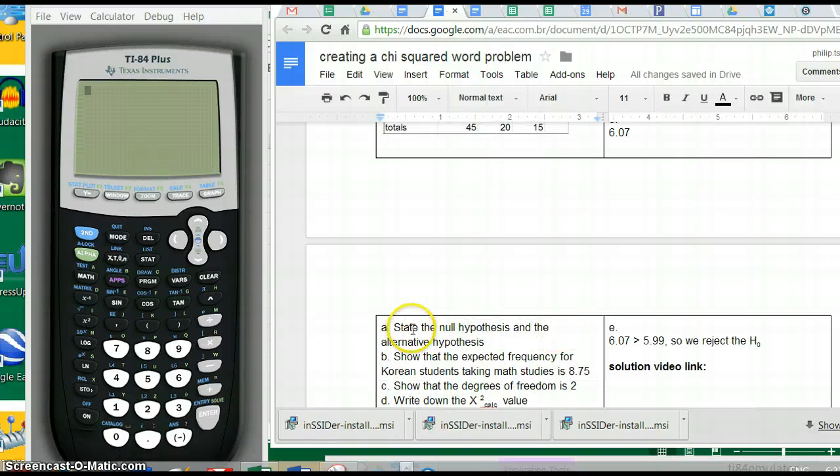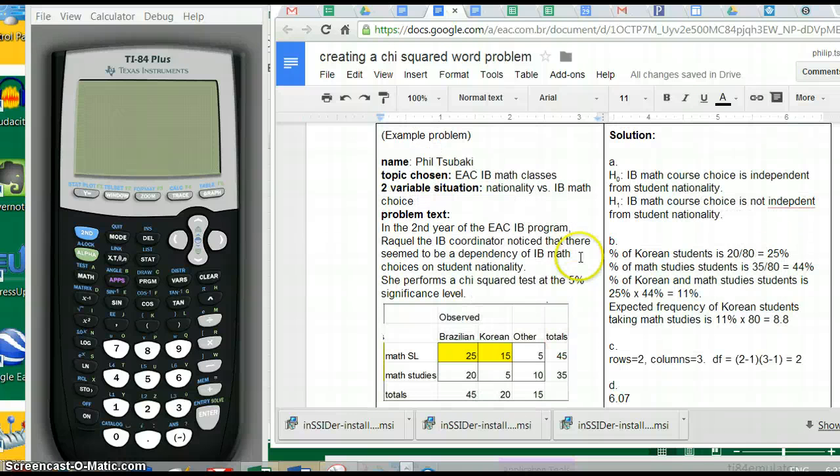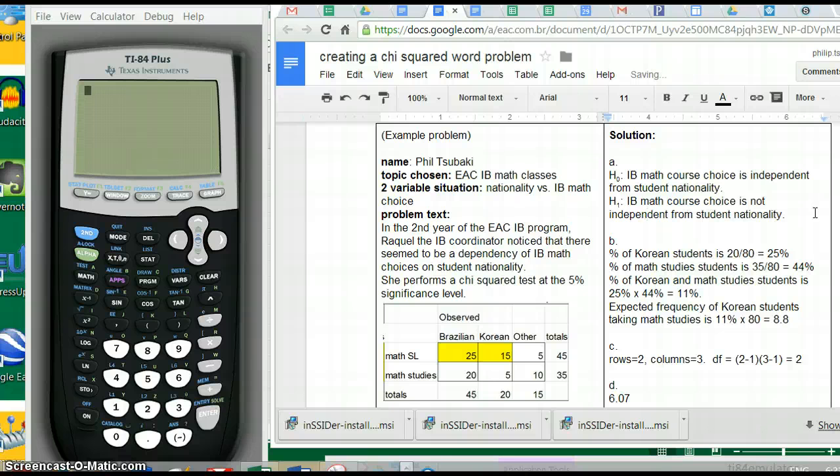The first question asks to state the null hypothesis and the alternative hypothesis. The null hypothesis is that the IB math course choice is independent from student nationality. Remember that the null hypothesis is always assuming that the two variables are independent. And then the alternative hypothesis, H₁, is always the opposite, that they are not independent.